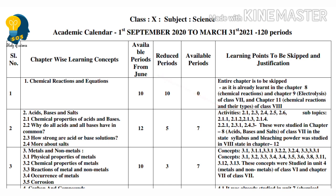First, let us have a look towards the activities. Activity number 2.1, 2.2, 2.3, 2.4, 2.5, and 2.6 — these are the main concepts.